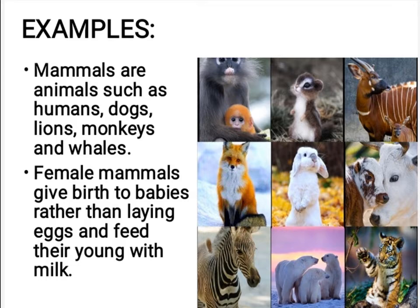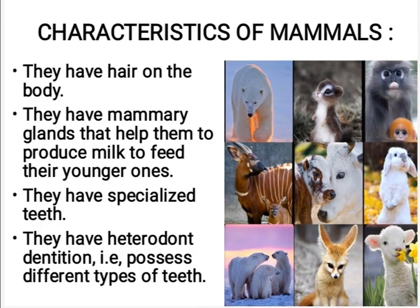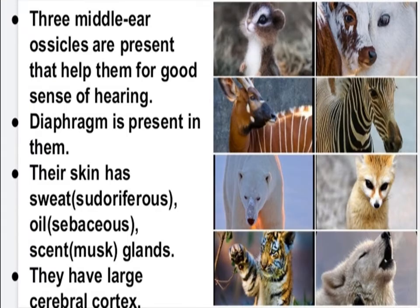Now we discuss the characteristics of mammals. First, they have hair on the body. They have mammary glands that help them produce milk to feed their young ones. They have specialized teeth — they have heterodont dentition, meaning they possess different types of teeth.